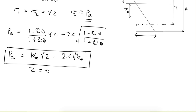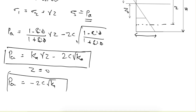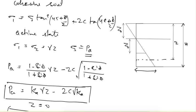If we put z = 0, that is at the top of the wall, active earth pressure equals −2c·√Ka. So the active earth pressure at the top is not zero; it has a value of −2c·√Ka. This means the soil is in tension at the top of the wall — the soil is in tension in this zone.